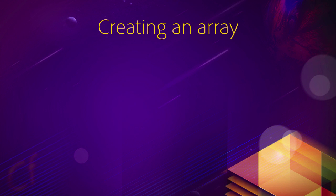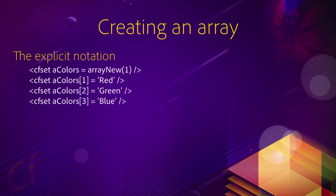To create arrays, exactly like structures, we have two notations: the implicit and the explicit notation. For the explicit notation, you will use a bunch of cfset statements. The first one, cfset A_colors equal ArrayNew, creates an empty array.